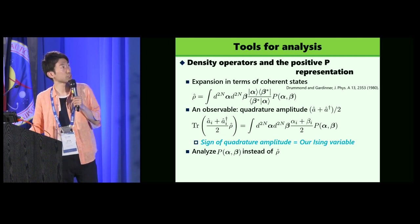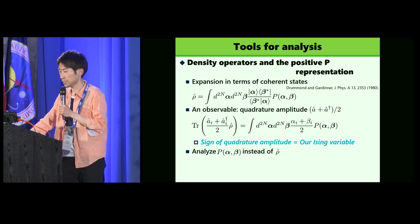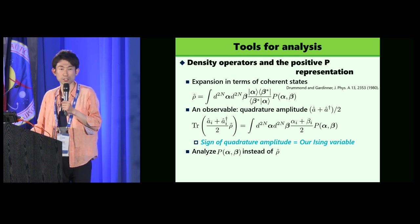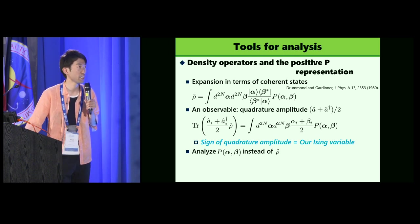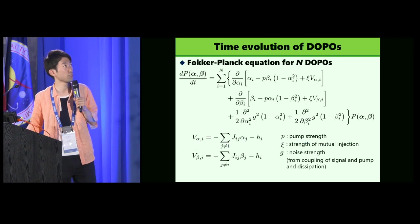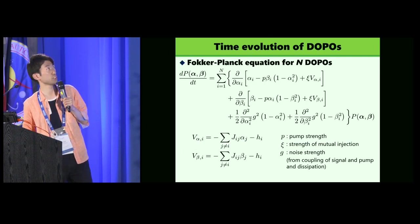Why this variable is important is that the sign of quadrature amplitude is our Ising variable in the CIM. So what we try to compute is that value. To this end, we analyze the distribution P instead of the rho itself.